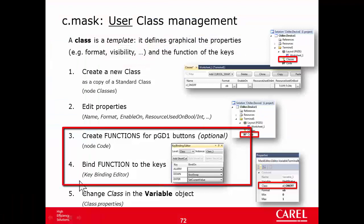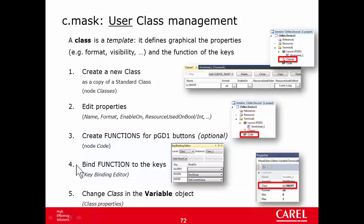The next steps would be to define the function of the keys: create the function, set the function, and then bind them with the keys. In this case, we don't need to change the behavior of the keys — the ones from the standard class are fine. So in this specific exercise we can skip steps 3 and 4.